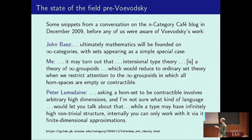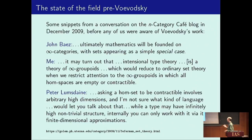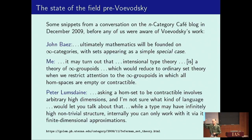Then Peter said, well, that's a nice idea, but asking a hom set to be contractible involves arbitrarily high dimensions. Because if you think about contractibility for an infinity groupoid, you have all the higher homotopy groups that have to vanish, and it's not clear what kind of language lets you talk about that. It seemed to him at that time, and to me too, that a type in type theory could have higher dimensional structure.